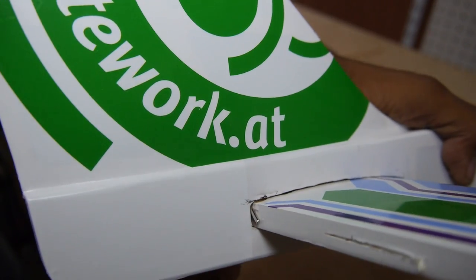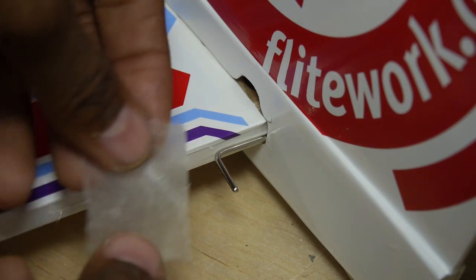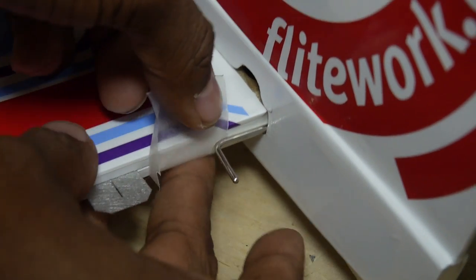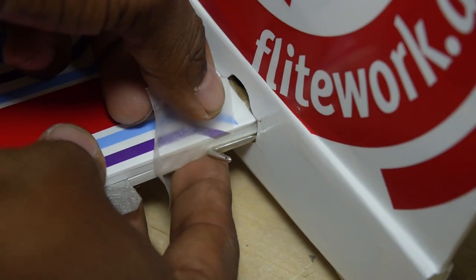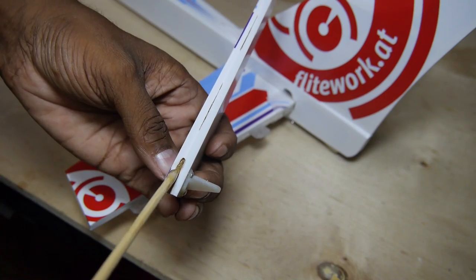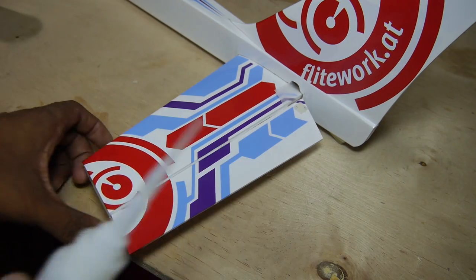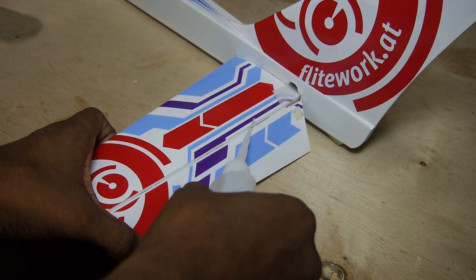Carefully slide in the elevator crossmember. Some wax paper is used to keep the glue isolated. Slide in the hinge control surface, then glue into place with thin CA.